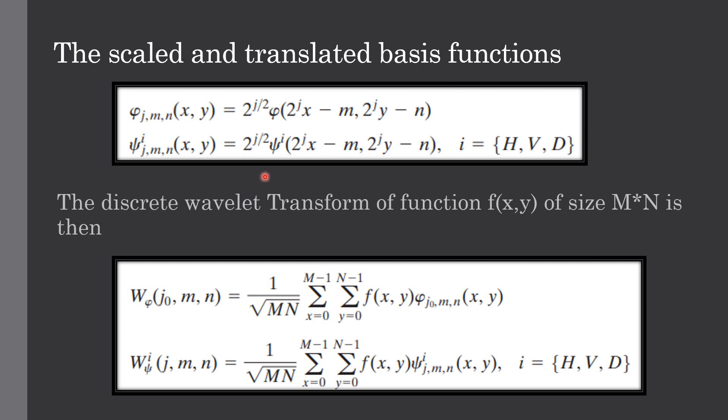Where i is the subscript that assumes the values of h, v, d. And the discrete wavelet transform of a function f(x,y) is given like this. These coefficients define an approximation of function f(x,y) at scale j0, and these coefficients add horizontal details.